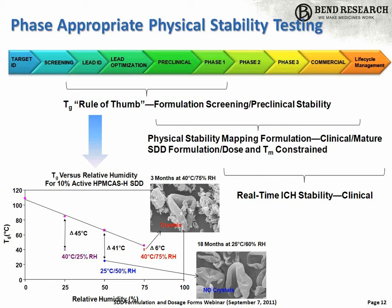More often than not, the assumption early on in formulation is that we're operating in that kinetically stable regime. As such, at an early stage during formulation development, we use a rule-of-thumb approach to understand where the formulation lies with respect to glass transition temperature at a given storage condition. We can measure using DSC — differential scanning calorimetry — the glass transition temperature as a function of humidity and plot that out, comparing it to ICH storage conditions. A key one, the most aggressive ICH storage condition, is 40°C, 75% RH.